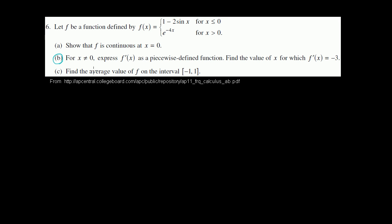Part b. For x not equal to 0, express f prime of x as a piecewise defined function, and find the value of x for which f prime of x is equal to negative 3. The first thing you might wonder is why x equals 0 is excluded — the derivative will be something different when we approach x equals 0 from the left versus from the right. So let's figure out the derivative for all other values of x.